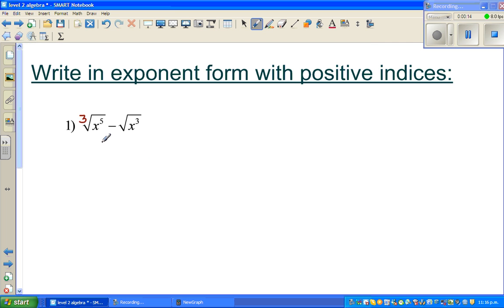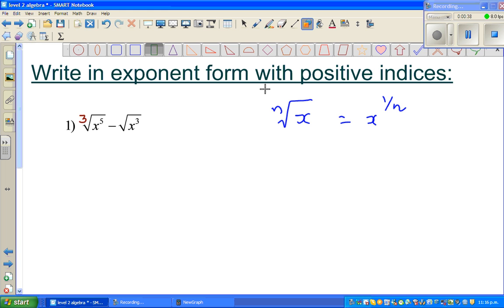Okay now this question is cube root of x to the power 5 minus square root of x cubed. Now you should know this general rule. The nth root of x is x to the power 1 over n. This is the general formula or the general rule.